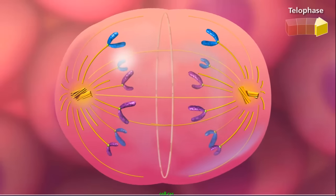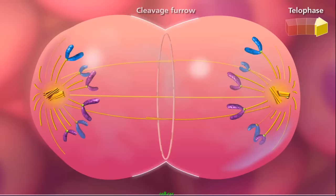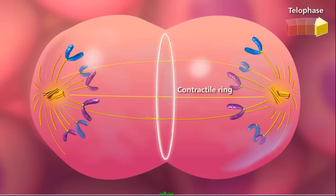At telophase, a cleavage furrow forms in the center of the cell. This indentation is made from a constricting belt of actin filaments surrounding the inside of the cell's circumference.